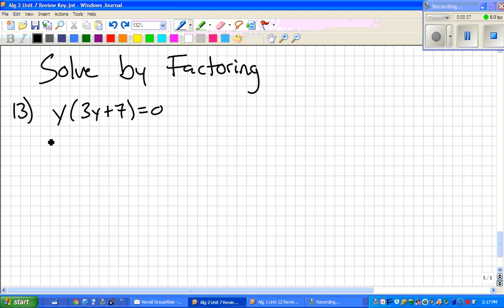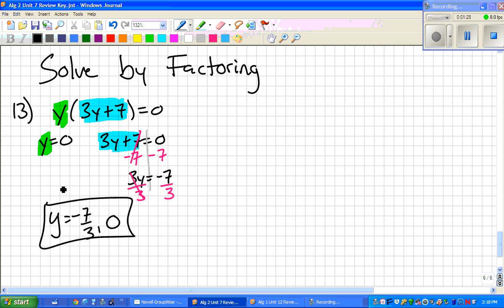So once we do that, we take everything that has a y, so I have a y out here and a y out here. However many y's we have, I'm going to take whatever is connected to it and set it equal to 0. One of the green is nice because it's already done, y equals 0. But now we have to solve. You can draw the line down the middle, subtract 7 to both sides. We get 3y equals negative 7. Divide by 3, so our final answer would be y equals negative 7 over 3 comma 0. Those are our two answers.